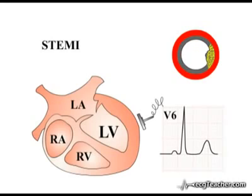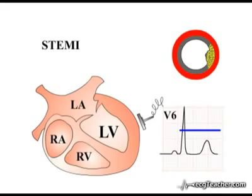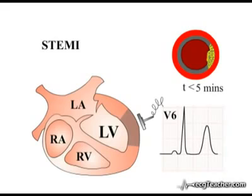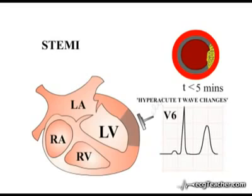Normal T waves tend to be slightly asymmetrical in shape and less than 50% of the height of the preceding R wave. Within the first few minutes of complete vessel occlusion, T waves in the leads overlying the affected area rise in amplitude. The mechanism underlying these hyperacute T wave changes is unknown.